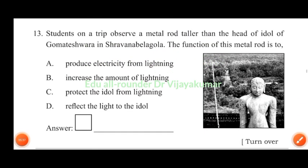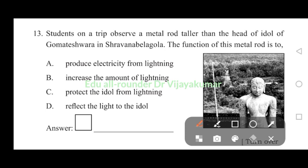Students on a trip observe a metal rod taller than the head of idol of Gommateshwara in Shravanabelagola. The function of this metal rod is to protect the idol from lightning. Answer C. The rod protects the idol from lightning, neutralizes it when lightning strikes.